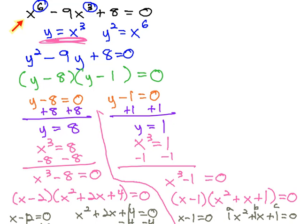Which seemed quite simple, x to the 6th, minus 9x cubed, plus 8.